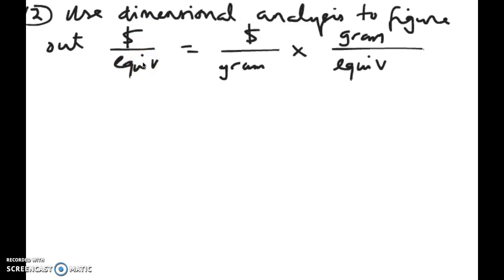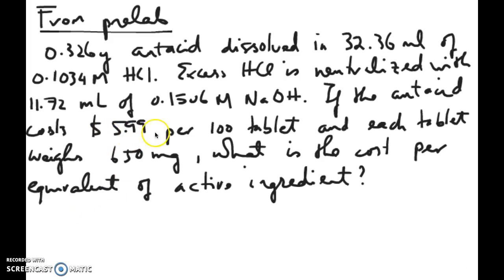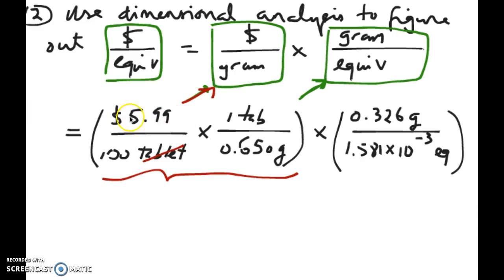To do this, I basically need to do a little dimensional analysis. The information I have right now tells me that I have a certain number of equivalents in a certain grams of tablet — I weighed a certain amount at the beginning and calculated that many equivalents from that gram. To convert to dollars per equivalent, I need to multiply by how much it costs per gram of tablet. Going back to the question, it costs $5.99 per 100 tablets and each tablet weighs 650 milligrams or 0.65 grams. I take the cost per 100 tablets and multiply by one tablet per 0.65 grams, so the unit becomes dollars per gram.